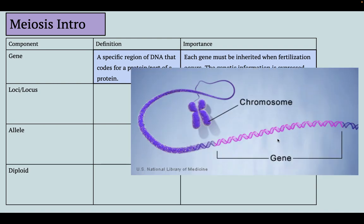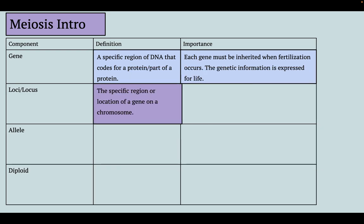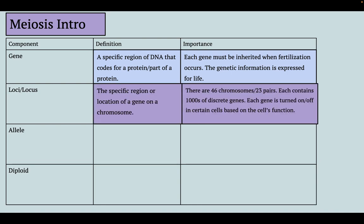When we look at our chromosomes, here are sister chromatids for a duplicated pair of chromosomes — a gene is just going to be a piece of information somewhere on that chromosome. A loci or locus is that region or location of a gene on a chromosome, so where specifically are we finding it?